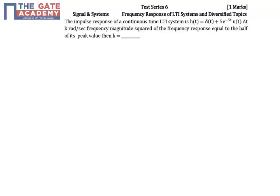In the given problem, the impulse response of a continuous LTI system is given. At some k radians per second, the squared frequency response is equal to half of its peak value. We need to find the value of k at which that happens.